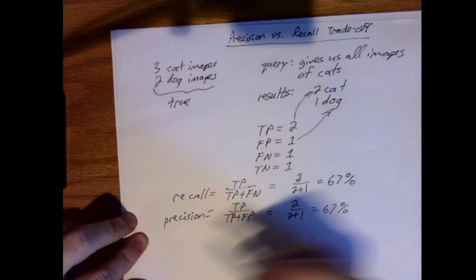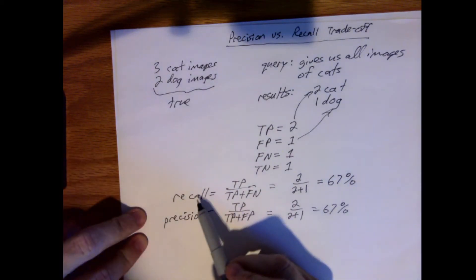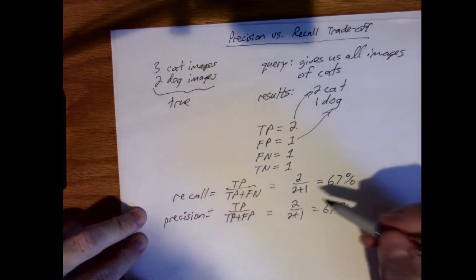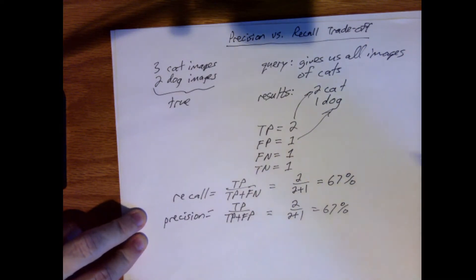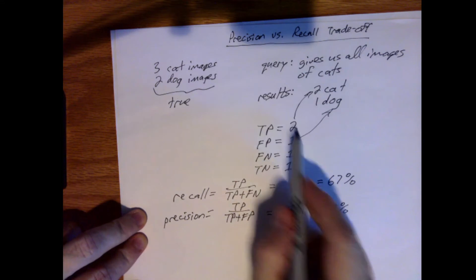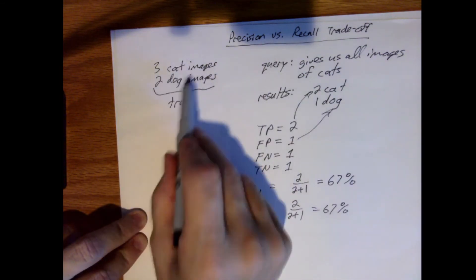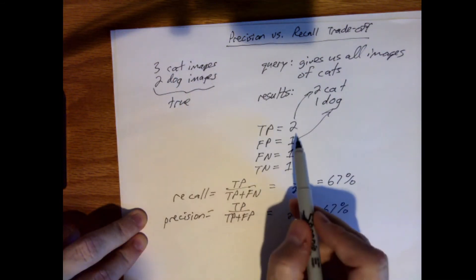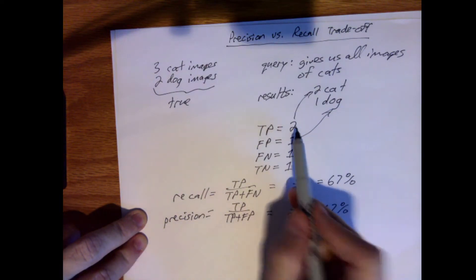So what do these really mean? Well, when we talk about recall, what we're really saying is of the true images of cats in the data set, how many were classified as cats. That is, out of the three cat images that truly were there, how many did our system return? And that was two. So 67%.